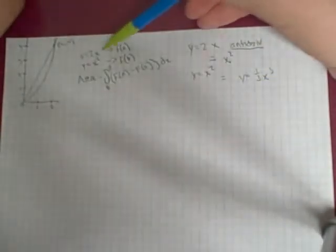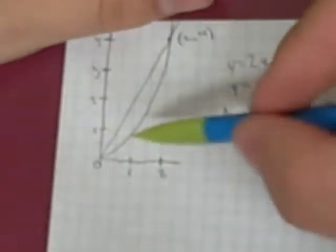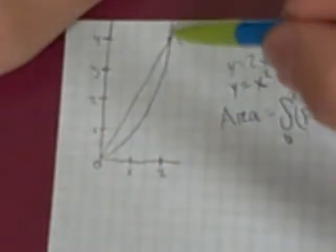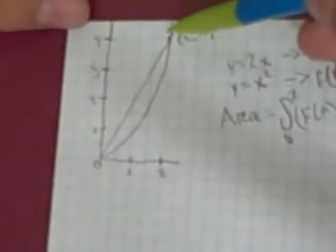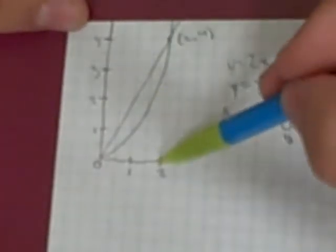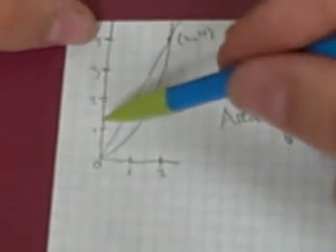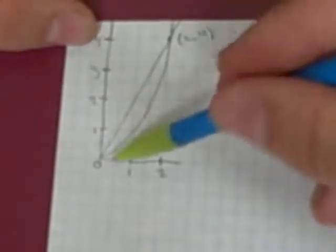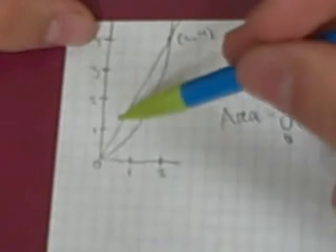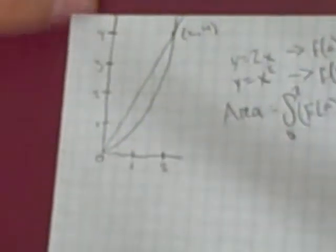The two equations we're going to use today are y equals 2x and y equals x squared. As you can see on the graph right here, the basic graph shows y equals 2x and y equals x squared. They intersect at (2, 4). The upper bound vertically is 4 and the origin is 0, and horizontally it's going to be 0 and 2. The intersection points are the origin and (2, 4).